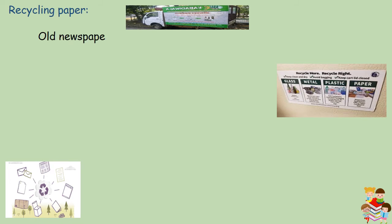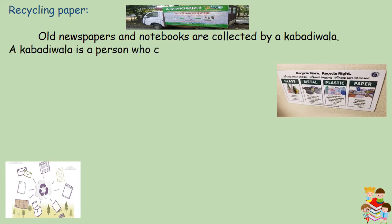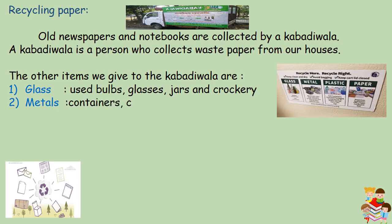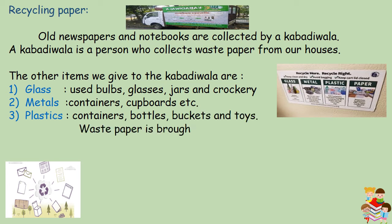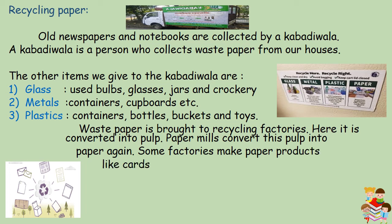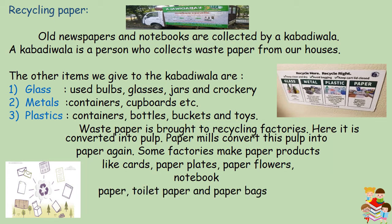Recycling paper: Old newspapers and notebooks are collected by a kabadiwala — a person who collects waste paper from our houses. Other items we give to the kabadiwala include glass, used bulbs, glasses, jars and crockery; metals such as containers and cupboards; and plastics such as containers, bottles, buckets and toys. The waste paper is brought to recycling factories where it is converted into pulp. Paper mills convert this pulp into paper again. Some factories make paper products like cards, paper plates, paper flowers, notebook paper, toilet paper and paper bags from recycled paper.